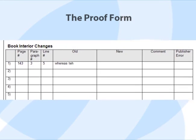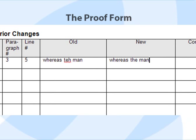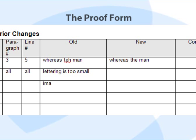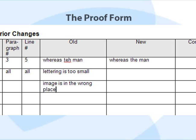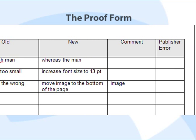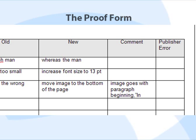In the next two columns, old and new, you'll enter the way the error appears now and how it should appear when corrected. If the error is a one-word change, we ask that you please include the words before and after the error — this will help us locate it more quickly. If the correction is a design or layout change, use the old column to describe what you do not like about the current design or layout, for example, lettering is too small or image is in the wrong place. Then in the new column, describe how you would like the design or layout to be changed. When making design and layout changes, be as specific as possible. In the comment column, you can enter any additional information that might help your book designer understand the correction.